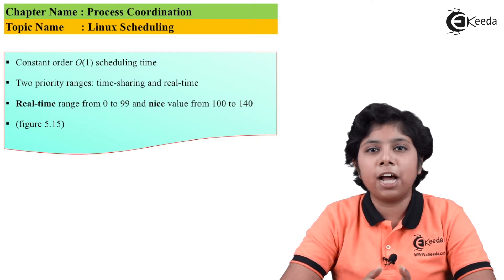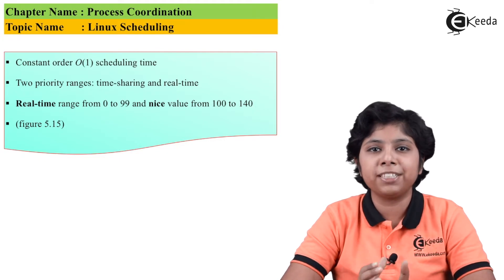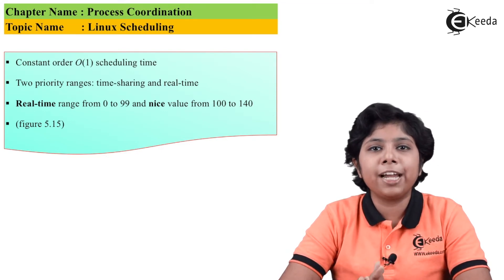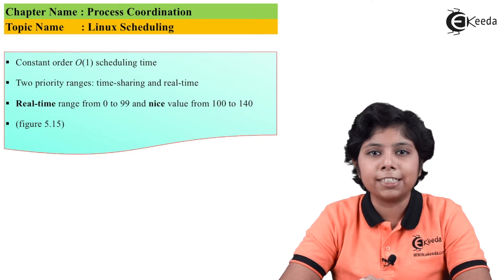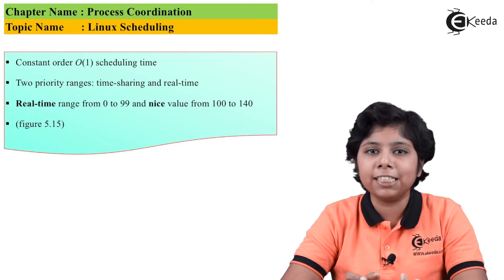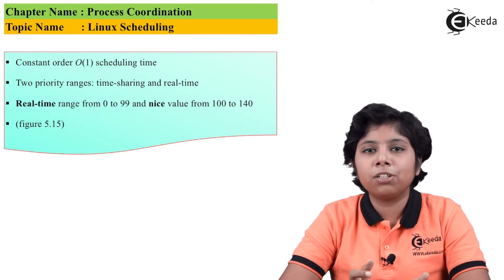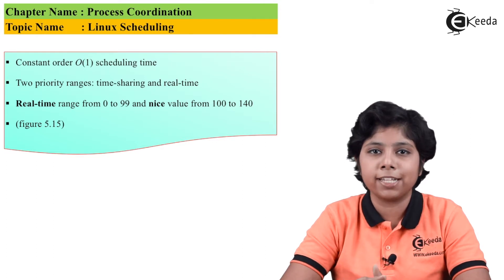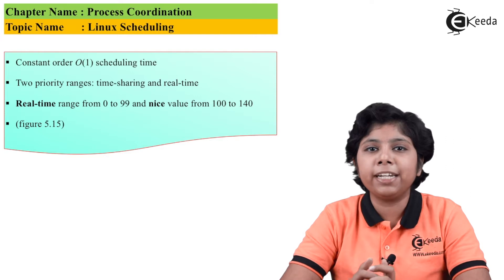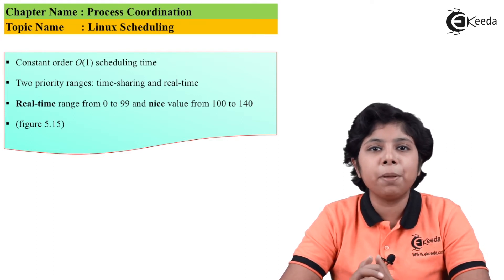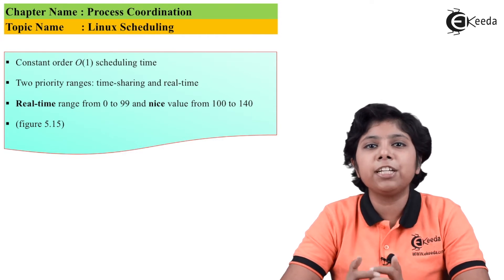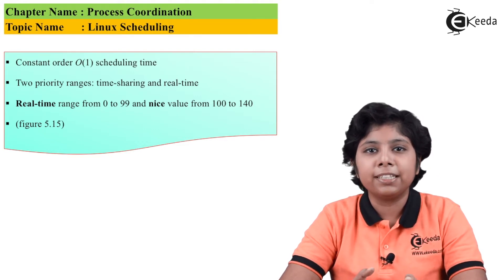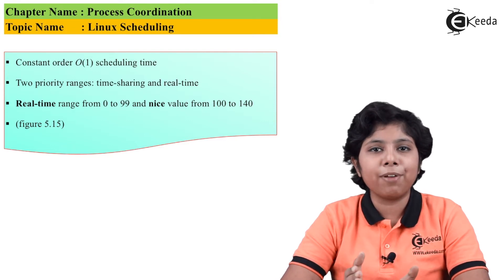New scheduling classes can be added during kernel development. Rather than using strict rules associating a relative priority for each task, the Linux kernel uses a value known as the nice value, which is associated with each process. The nice value ranges from minus 20 at the lowest to plus 19 at the highest. The nice value concept comes from the idea that a process is being nice to the system by lowering its relative priority. The default nice value is 0.